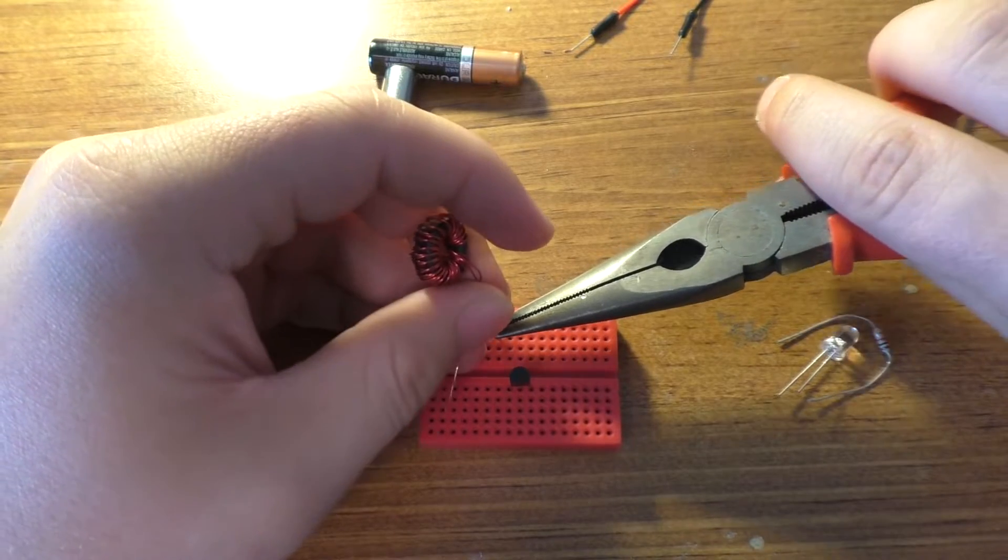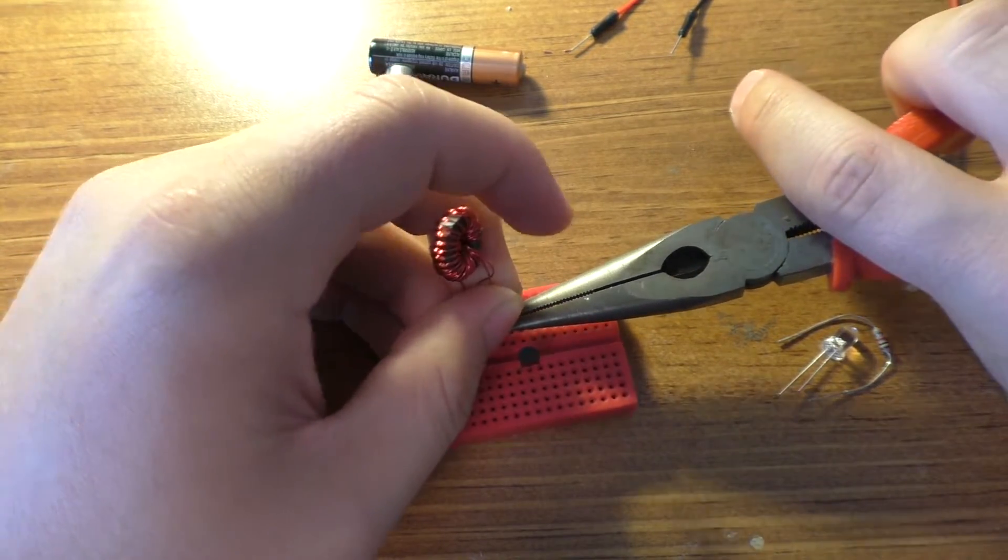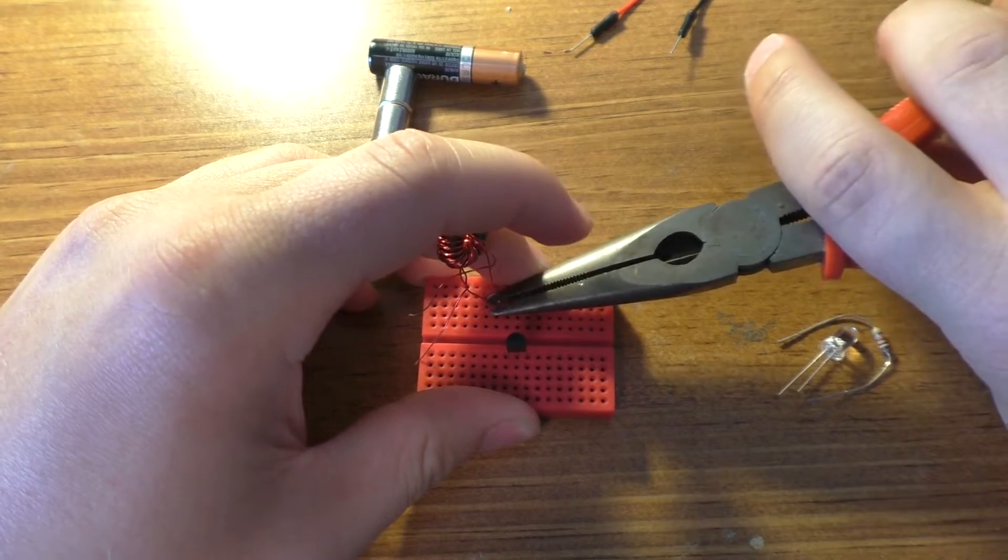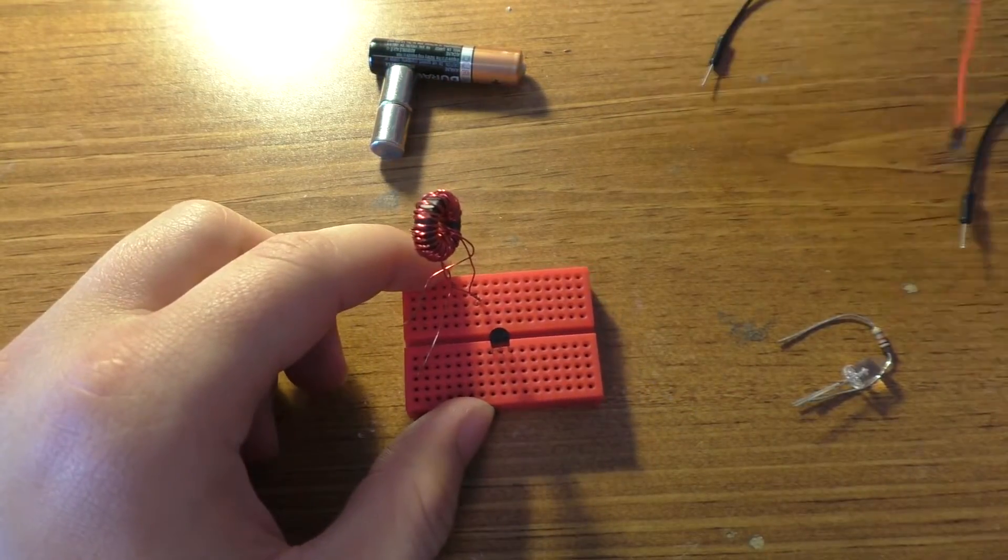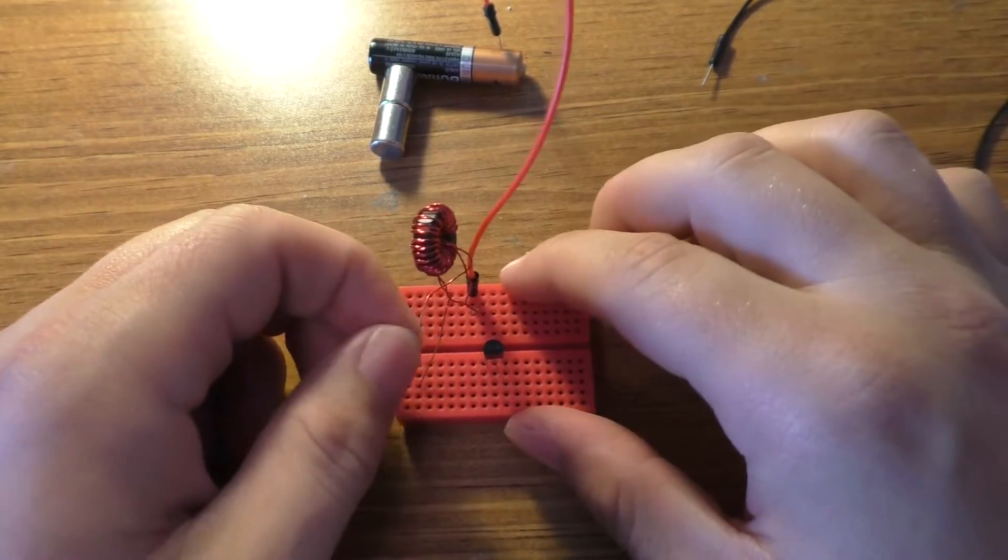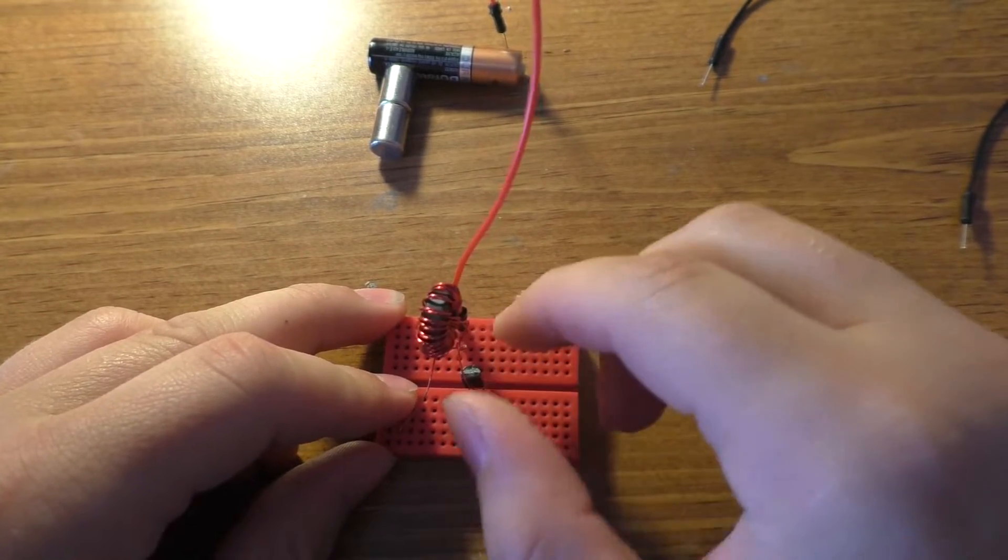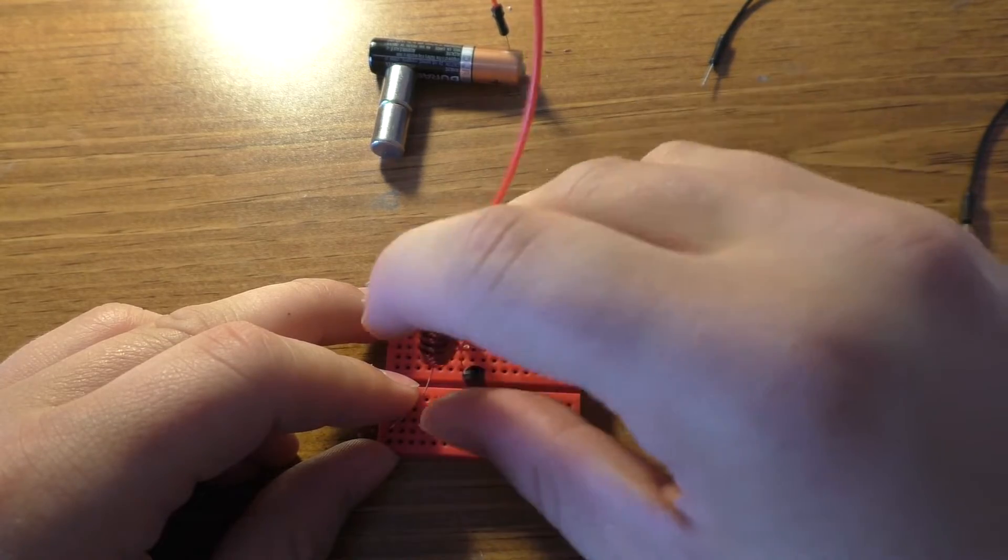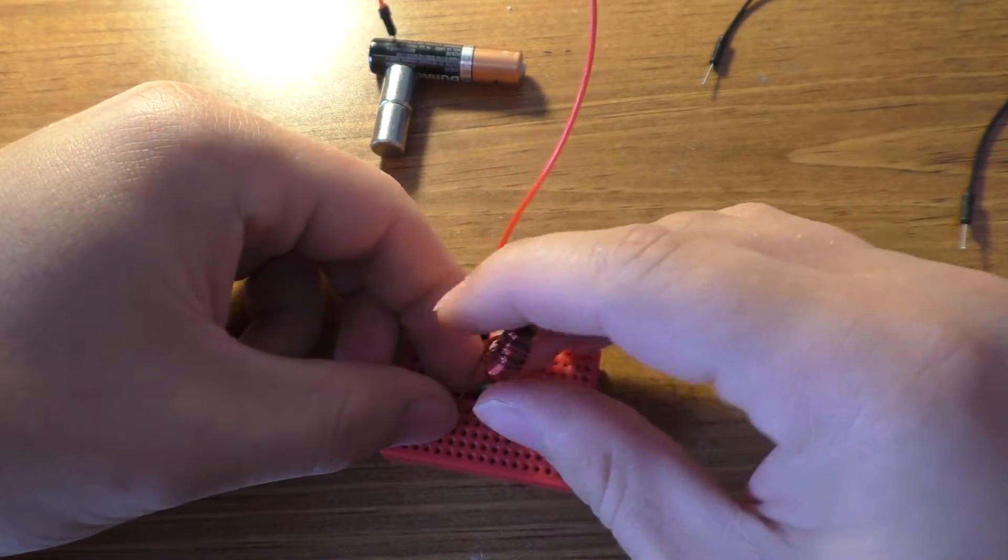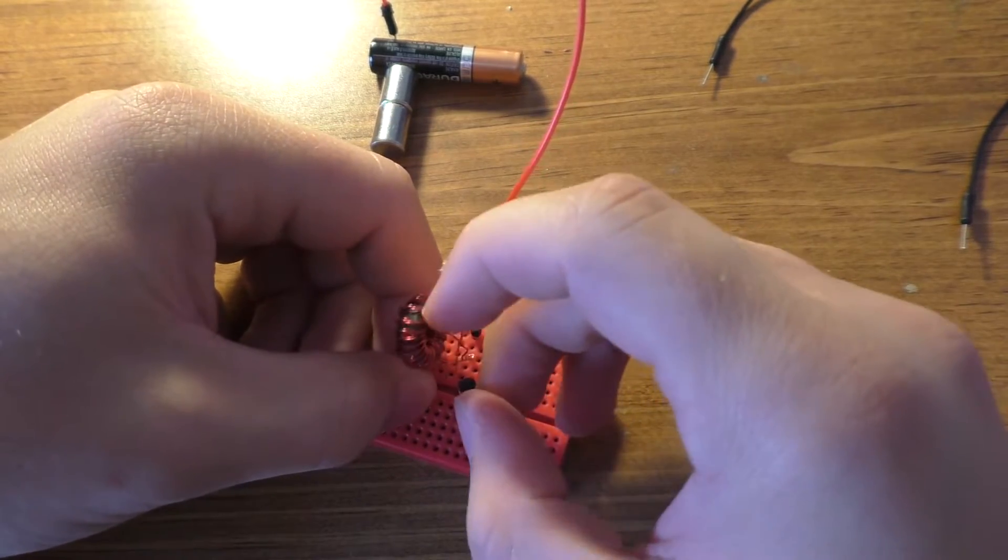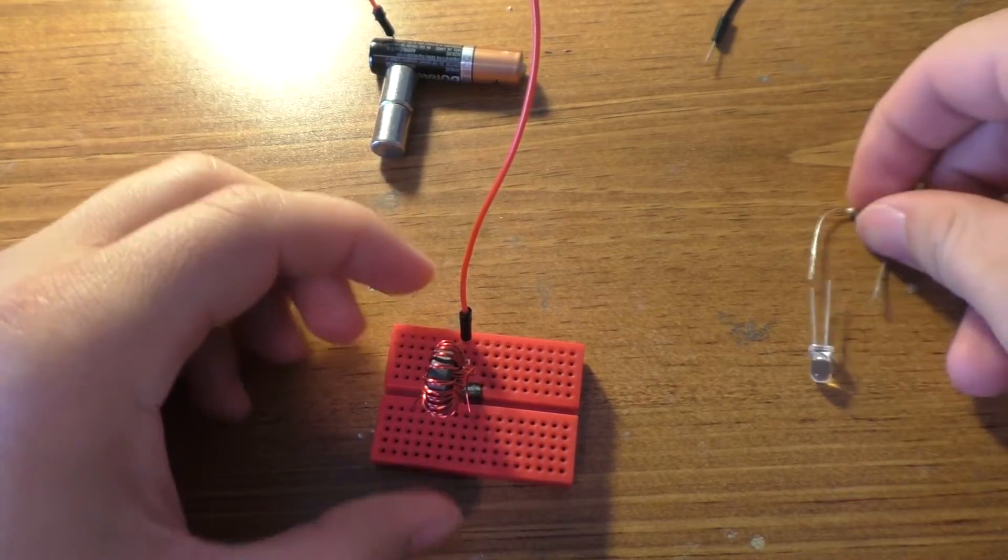So I'll stick the transistor in there and we'll put this toroid or our little transformer into one of these points on the breadboard. Now the wires that I twisted together earlier on this little transformer here, those are actually going to go to the positive connection of the battery. Then one of these wires, one of the single wires coming out of this transformer is going to go onto the collector of the transistor which in this case is the far right pin on that. Another one of these wires is just going to kind of go off onto the breadboard over here.